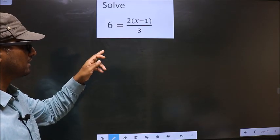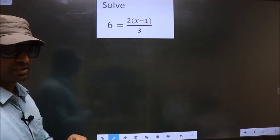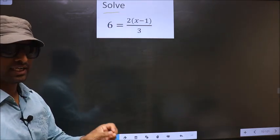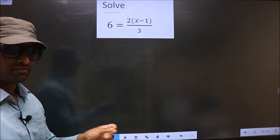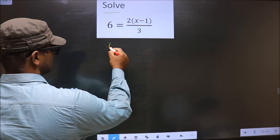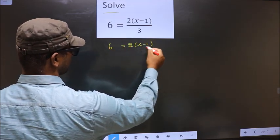Solve 6 equals 2 brackets x minus 1 by 3. Here they told us to solve, so we should find the value of x. First, the given equation is 6 equals 2 brackets x minus 1 by 3.